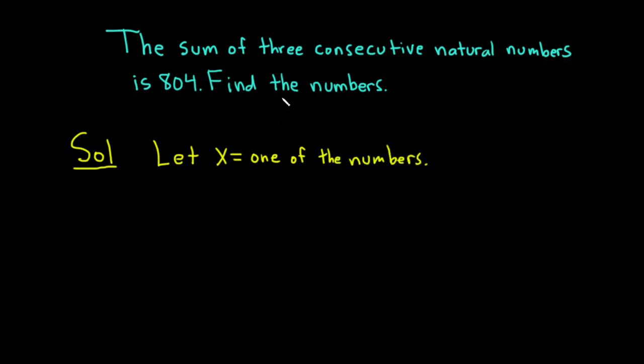We know that the sum of three consecutive natural numbers is 804. So, if we take x and add it to the next natural number, x plus 1,